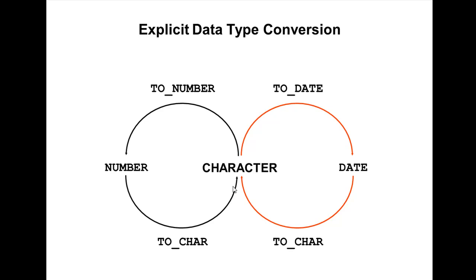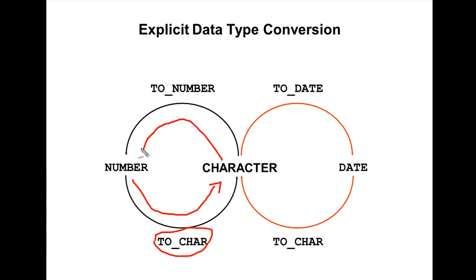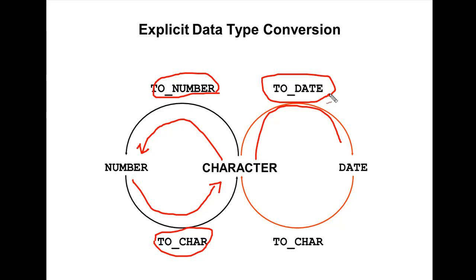For explicit conversion, from number data type to character, there is a TO_CHAR function. From character to number, we use the TO_NUMBER function. From character to date, use the TO_DATE function. From date to character, use the TO_CHAR function.